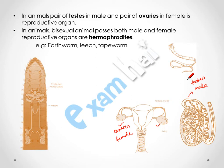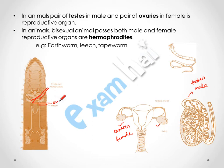In the earthworm, which has a segmented body, both a pair of testes and a pair of ovaries are present in the same organism. In tapeworm also, both male and female organs are present. Tapeworm is present in the intestine of cattle and can enter the human body through cattle.